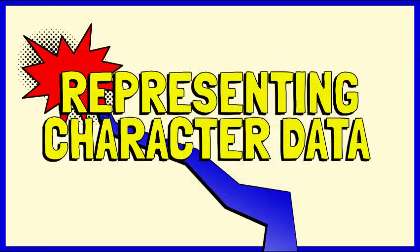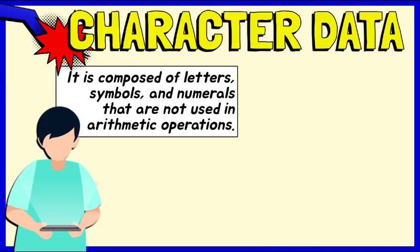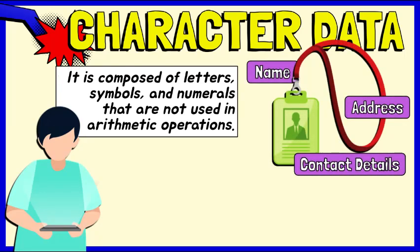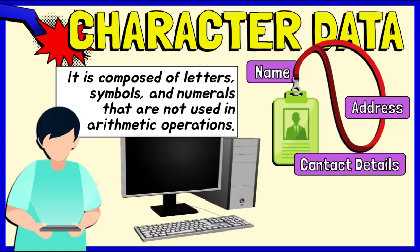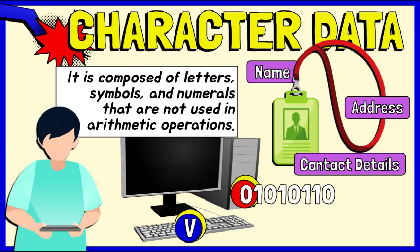Next, how do computers represent character data? Character data is composed of letters, symbols, and numerals that are not used in arithmetic operations. Examples of character data include your name, address, and contact details. When any key on a keyboard is pressed, it needs to be converted into a binary number so that it can be processed by the computer and can appear on the screen.